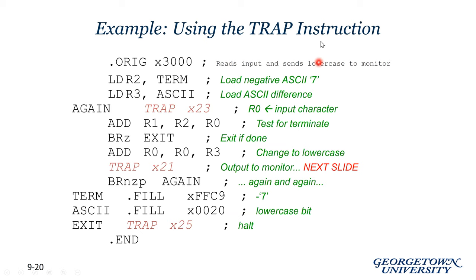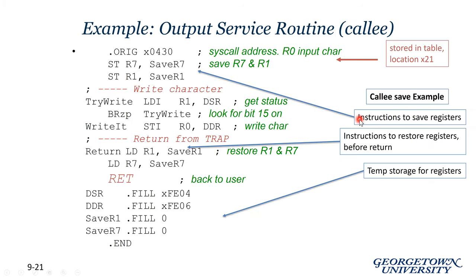Here's an example of using a trap instruction with callee save protocol. Before the service routine does anything, it saves R1 and R7 to two reserved memory locations. The service routine then executes. Before handing control back, it restores the value of R1 and then restores the value of R7. Then it hands control back to the user. This is a good example of callee save protocol.